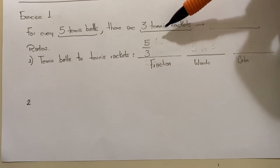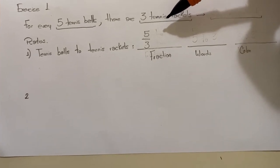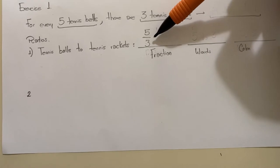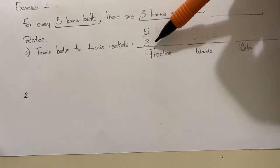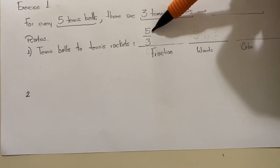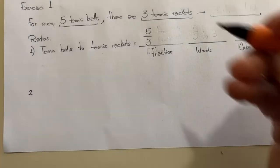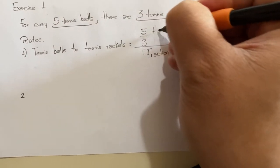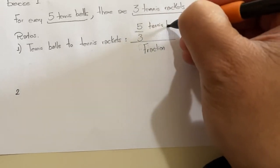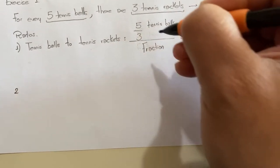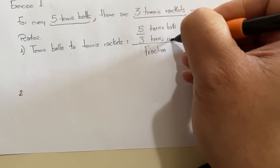On the first exercise, you must write the ratio between tennis balls to tennis rackets. In my last explanation, I told you that you can write the ratio as a fraction. So you can write five tennis balls on top and three tennis rackets on the bottom.